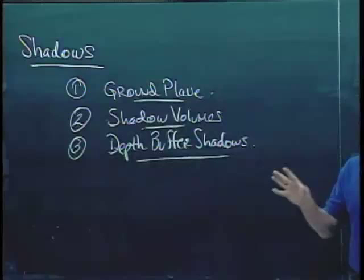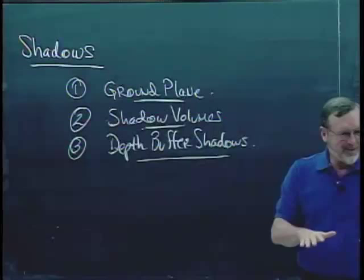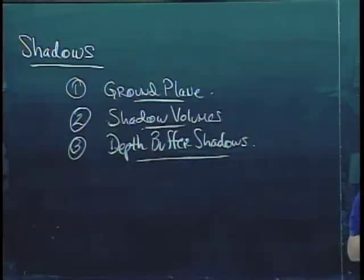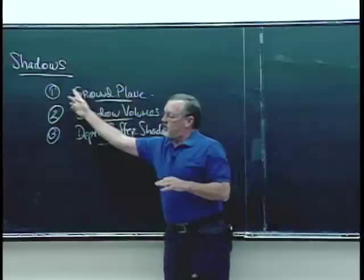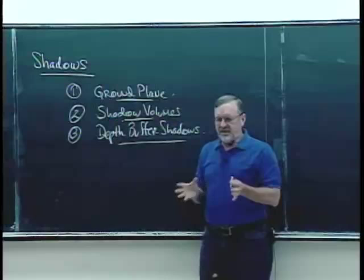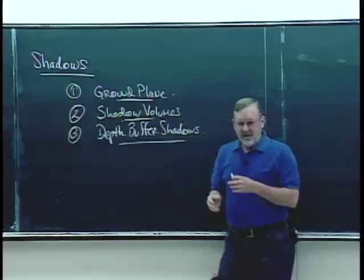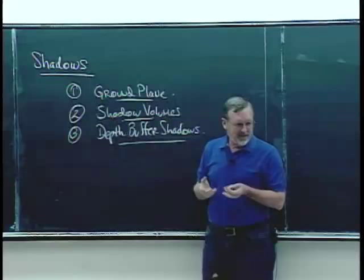Ground plane shadows are kind of what they sound like — you have a plane which is the ground, and you have something on that plane, like a box or a table, and you can generate a shadow on the ground plane fairly easily. This is the easiest method, the most frequently used, and in some sense the simplest to implement. Most people use it in games — you see it all over the place.